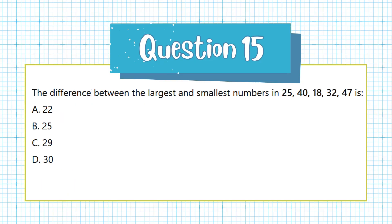Question 15. The difference between the largest and smallest numbers in 25, 40, 18, 32, 47 is: a. 22, b. 25, c. 29, d. 30.